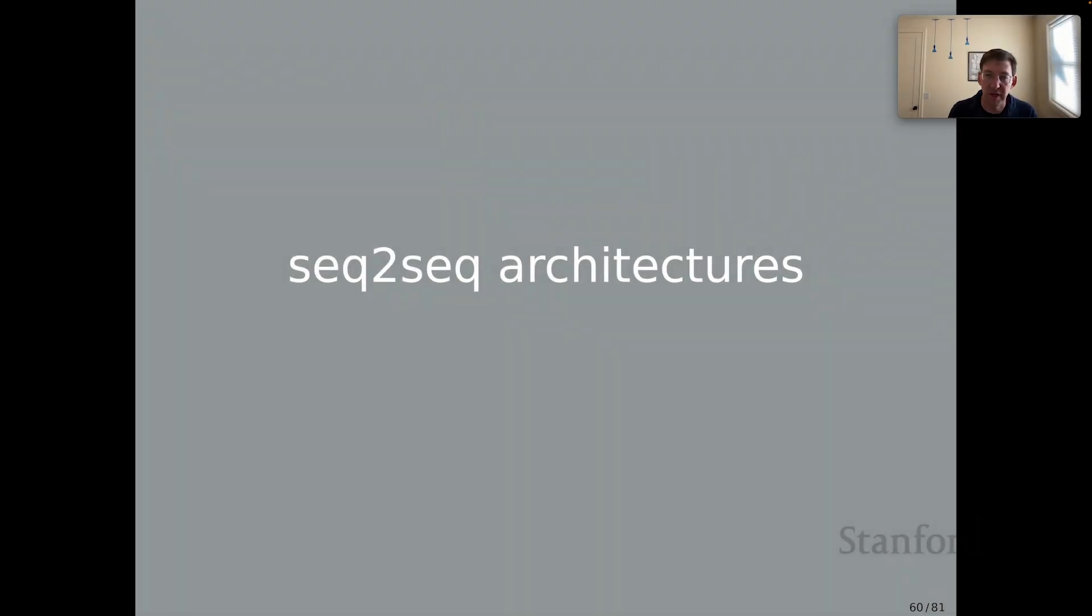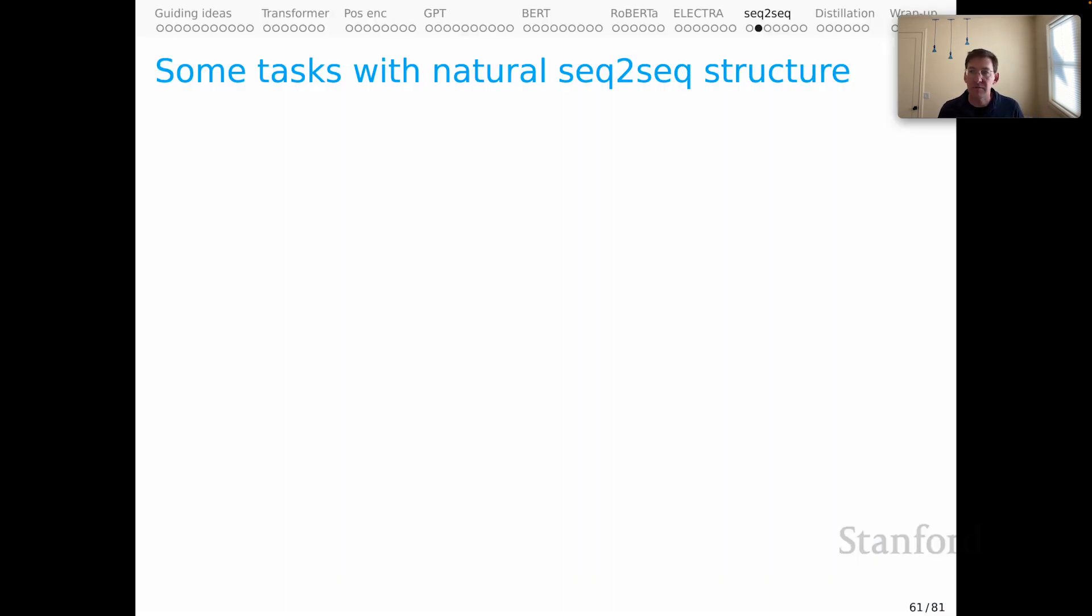Welcome back, everyone. This is part eight in our series on contextual representations. We're going to talk briefly about sequence-to-sequence architectures. To kick it off, I thought I would begin with tasks. These are going to be tasks that have natural sequence-to-sequence structure, and I'm trying to leave open for now whether we would actually model them with sequence-to-sequence architectures. That's a separate question.